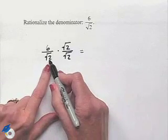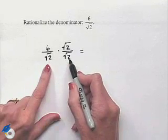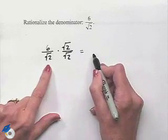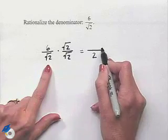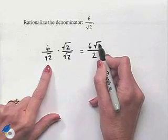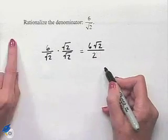And secondly, because of the fact that when we multiply the square root of 2 times the square root of 2, we end up with the square root of 4, which is 2. So our fraction looks like 6 square root of 2 divided by 2.